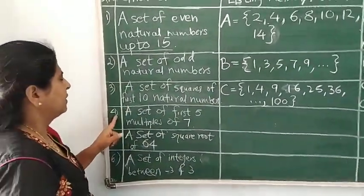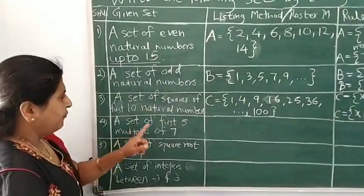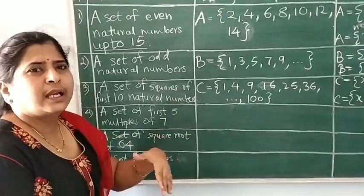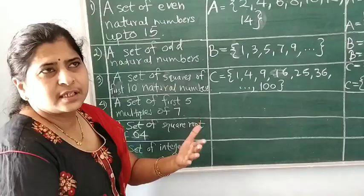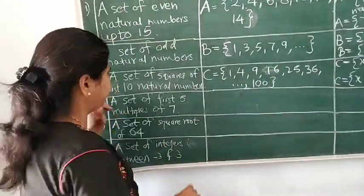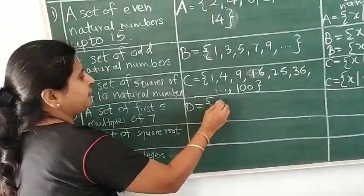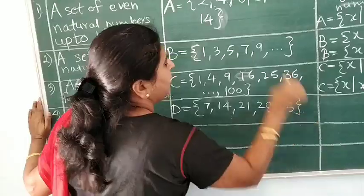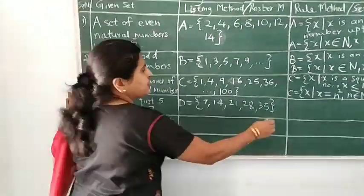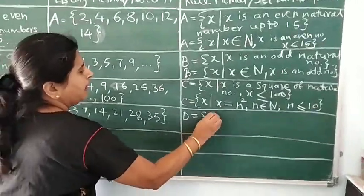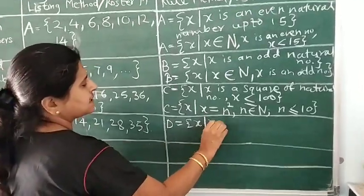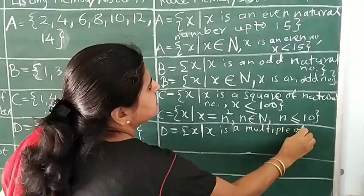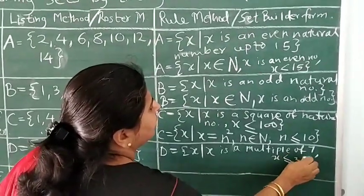Now let's see the fourth set: a set of first 5 multiples of 7. The first multiple of 7 is 7 times 1 equals 7. The second is 7 times 2 equals 14. We want up to 7 times 5 equals 35 — so we want the table of 7 up to 35. Let's take set D. By listing method: 7, 14, 21, 28, and 35. We have written all elements in listing form. By rule method in words: D is the set of all X such that X is a multiple of 7 and X is less than or equal to 35.